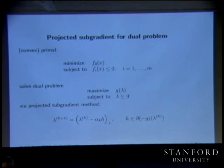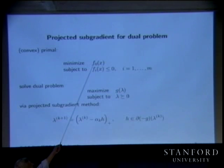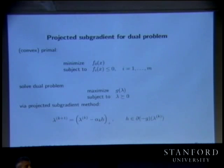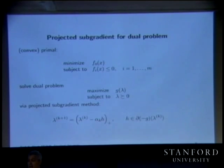We're going to be doing this in a couple of weeks — network flow methods and other things where this actually matters. One sledgehammer condition is that f0 is strictly convex, because if f0 is strictly convex, then f0 plus some lambda_i f_i, where f_i are convex, is also strictly convex for any lambda, and a strictly convex function has a unique minimizer.